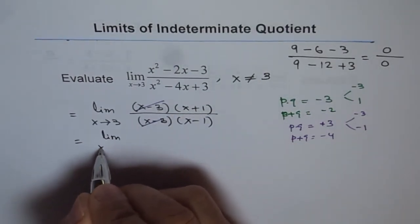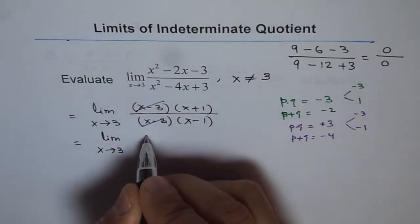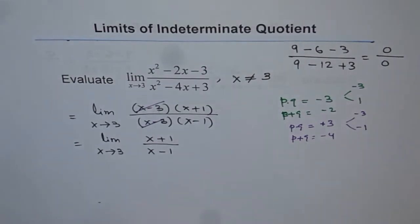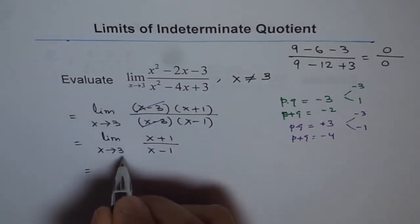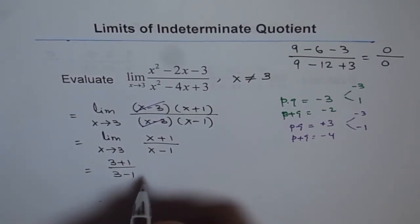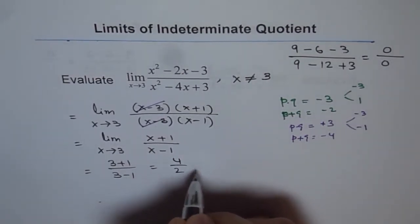So we get limit, x approaches 3, and we have x plus 1 over x minus 1. Now we can substitute 3 and evaluate the limit. So we get 3 plus 1 over 3 minus 1, which is 4 over 2,